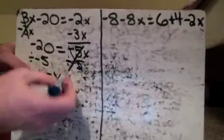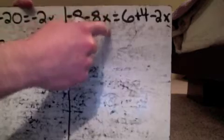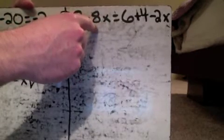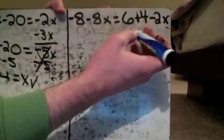On this side there are some things that we can combine together here. Not on this side so much because we've got minus 8 and then minus 8x - those can't go together. But over here I can put my 6 and my 4 together to make 10.